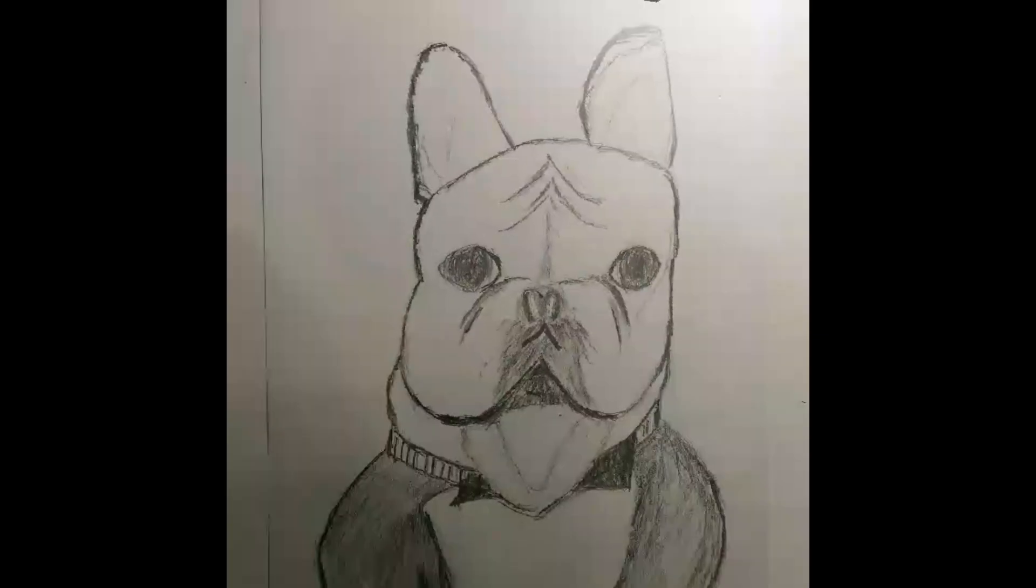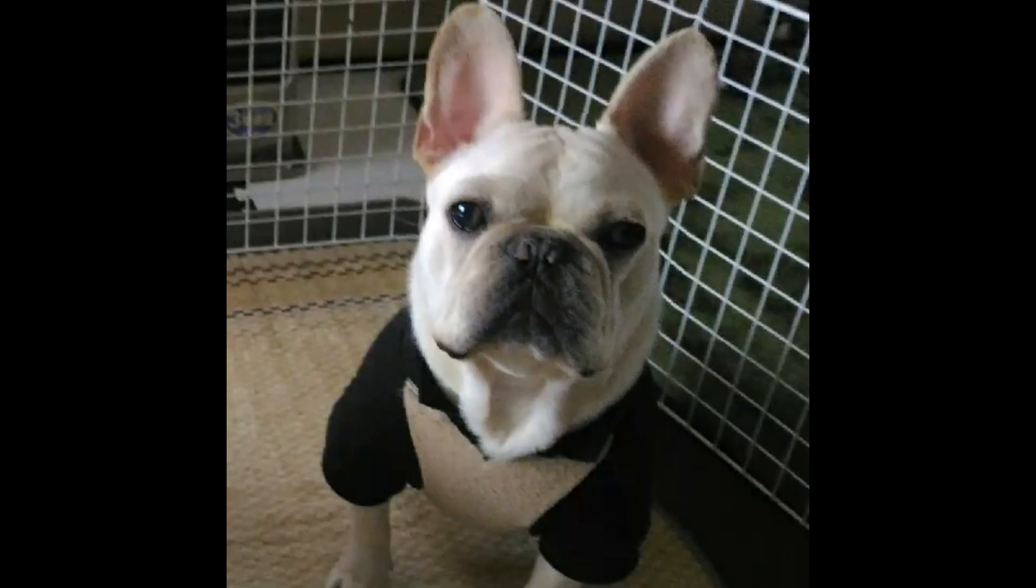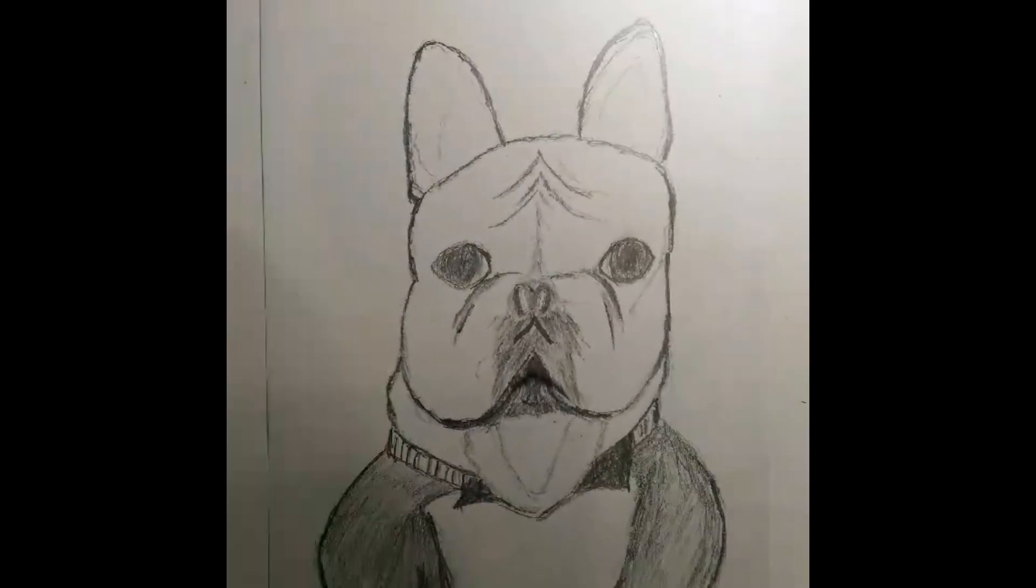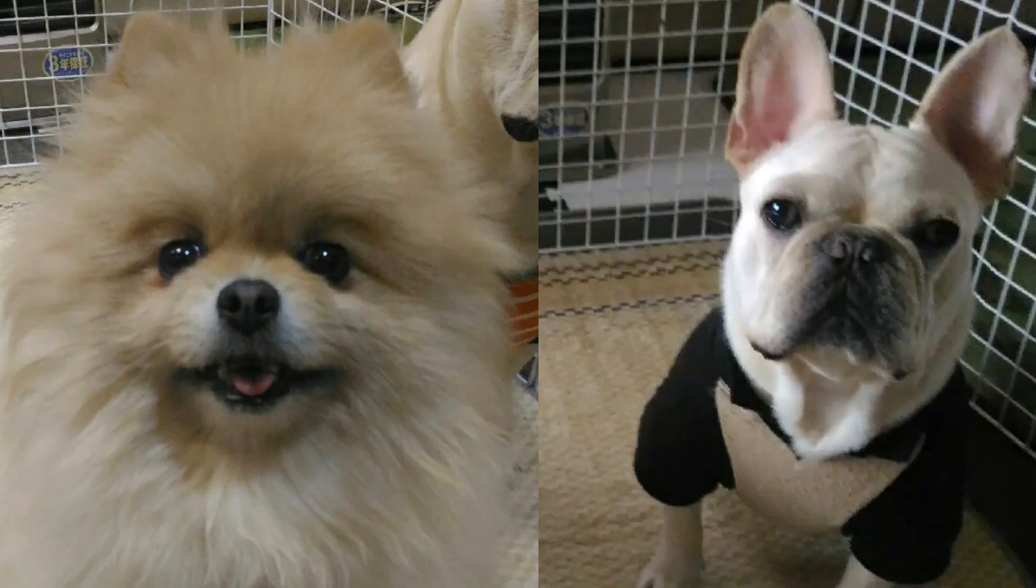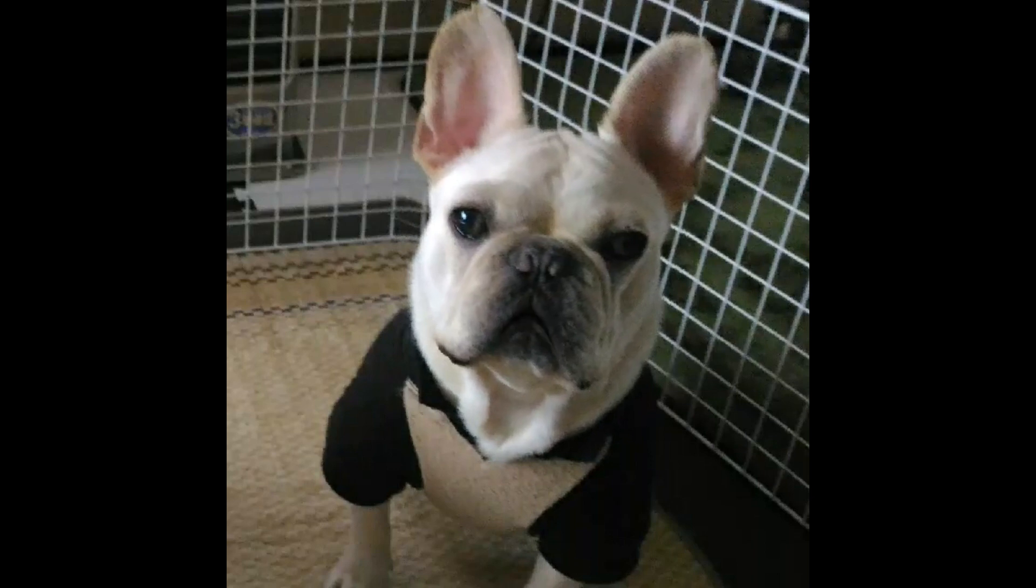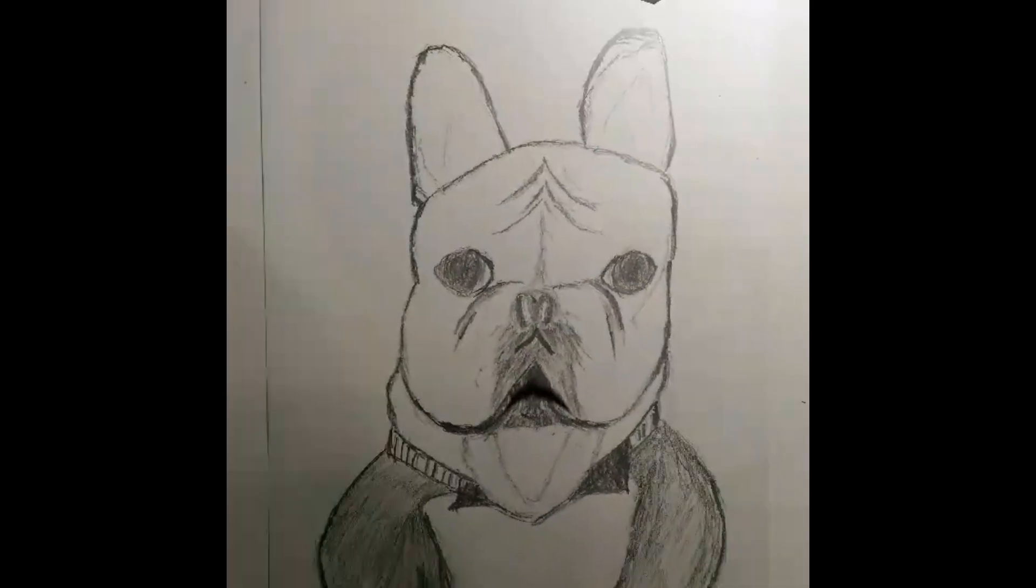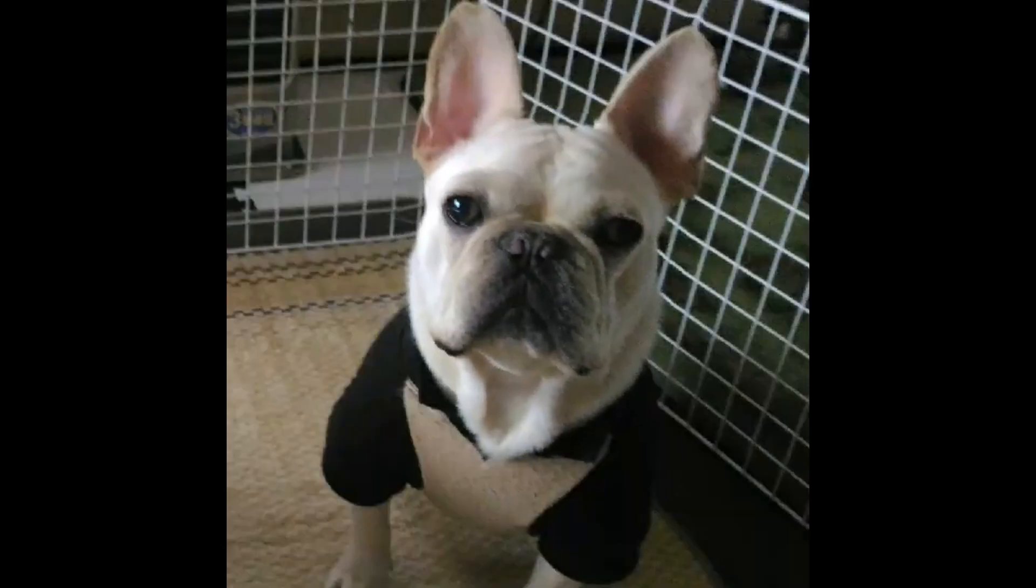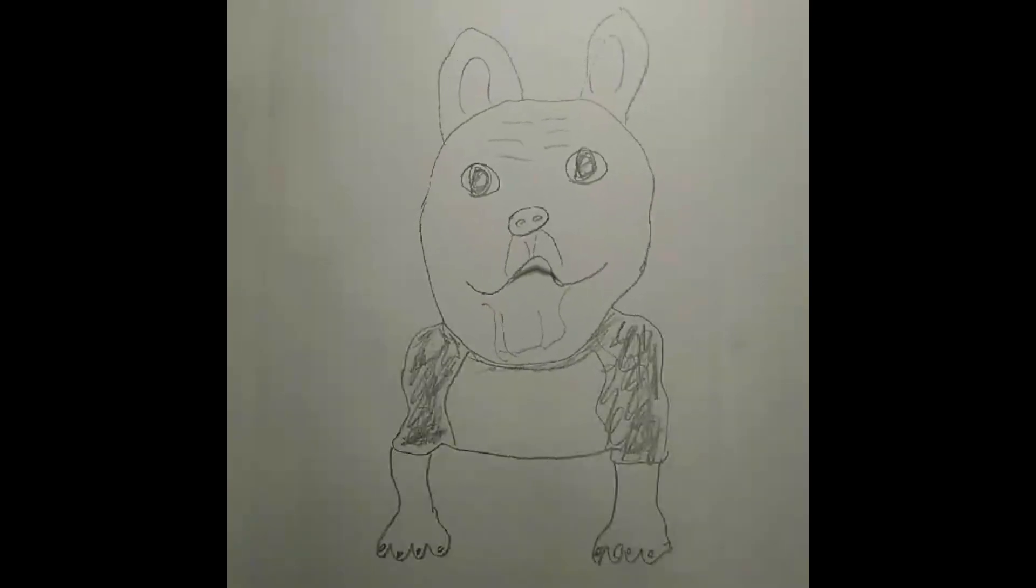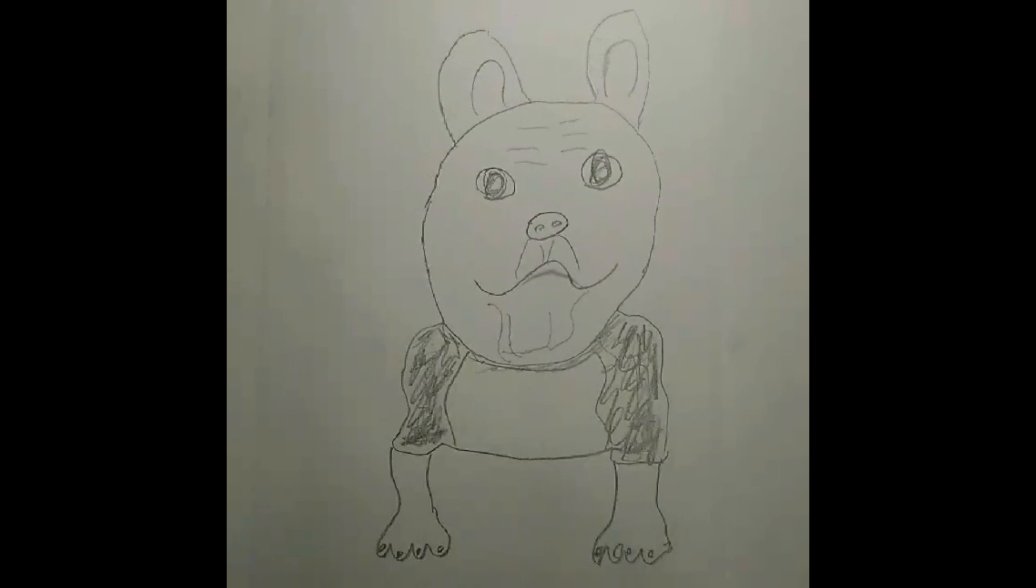迷子の迷子の子猫ちゃん、あなたのお家はどこですか。名前を聞いてもわからない。にゃんにゃんにゃんにゃん、泣いてばかりいる子猫ちゃん。犬のおまわりさん困ってしまって。